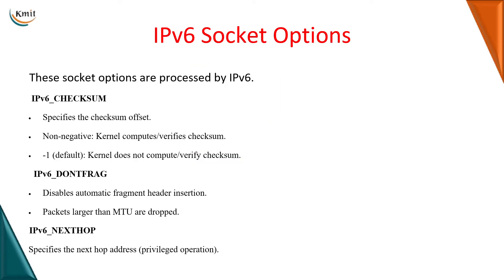The IPv6 socket options are the ones processed by IP protocol version 6. The IPv6 checksum option specifies the checksum offset — where the offset is located. If it is a non-negative number, the kernel itself will compute and verify the checksum. If it is minus 1, the kernel does not compute or verify the checksum value.